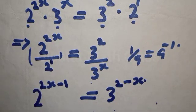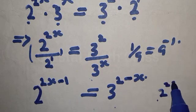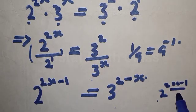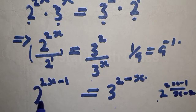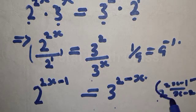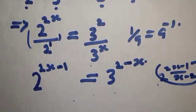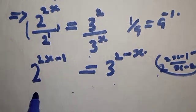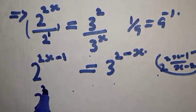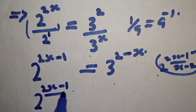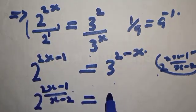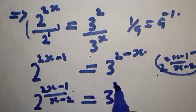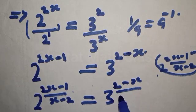From our question we are looking for 2 raised to power (2x minus 1) over (x minus 2), and this one is already 2x minus 1. So now what we do next: let's divide both sides of the exponent by (x minus 2). That is, we have 2 raised to power (2x minus 1) over (x minus 2) will be equal to 3 raised to power (2 minus x) over (x minus 2).